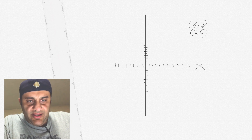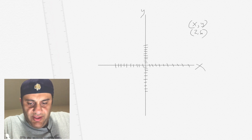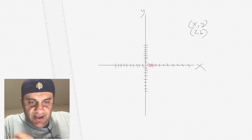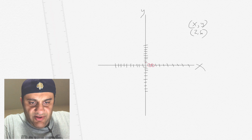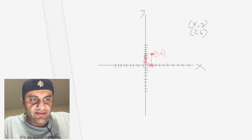There's the x, here's the y. If we want 2 on the x, we go 1, 2 on the x, and then we go up 6 positive on the y — 1, 2, 3, 4, 5, 6. So it goes to there, and there's the point 2, 6.